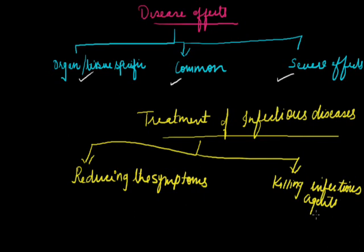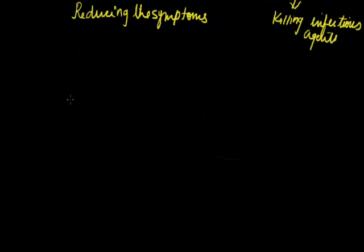On the other hand, reducing the symptoms is a temporary relief. Killing infectious agents, under this category, this can be done by targeting the biochemical pathways of infectious agents using specific drugs. Specific drugs like many painkillers, antibiotics are used. Let me talk about those specific drugs and antibiotics.